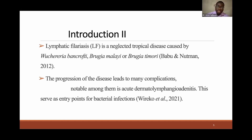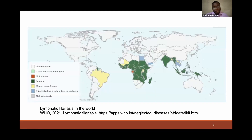Lymphatic filariasis is a neglected tropical disease caused by Wuchereria bancrofti, which accounts for 90% of cases. The progression of the disease leads to acute dermatolymphangiitis, resulting from subcutaneous or cutaneous inflammations occurring in the lymph vessels and lymph nodes, which begin to serve as entry points for bacterial infections. This is the distribution of lymphatic filariasis — it is still ongoing in the tropics, although there has been a decrease in microfilaremia in the blood. Currently in Ghana it's around 2%, and the WHO is looking at limiting it to less than 1%.